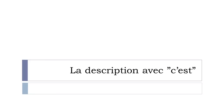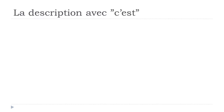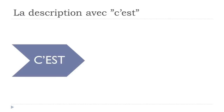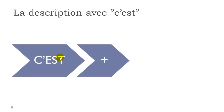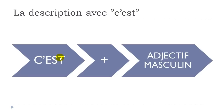La description avec 'c'est.' If you want to use this 'c'est' option to make a description, 'c'est' would be directly translated as 'it is' or 'this is.' In French, you add after that an adjective, but the adjective should always be at the masculine form — even if the thing you're describing would be feminine.